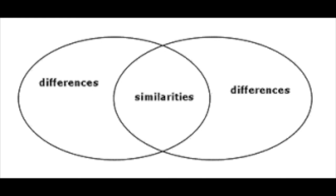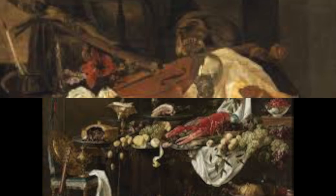Once you have a strong similarity relating to the artist's intent, you can use that to lead into the differences. Differences are a lot easier to find — you can spot them just by looking. However, you can't just say things like 'one has more objects, one has less' or 'one uses brighter colors, one uses darker colors' without saying any reason why. It's not enough to list differences; you need to explain why they're different and what that achieves in the paintings.